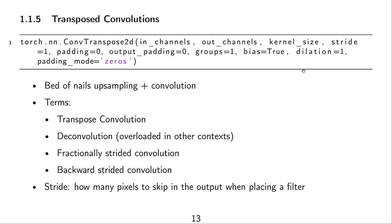Transpose convolutions are a very popular way of upsampling. And they are very similar to bed-of-nails upsampling plus performing a convolution. So, this is the PyTorch command, ConvTranspose2D. And you can see that a lot of these parameters are similar to what you know from a regular convolutional layer. You have a kernel size, a stride, a padding, you have the groups, you have dilation. There are other terms that are used for this, such as transpose convolution, that's maybe the main name. Deconvolution, maybe that's not a nice name, as it has other meanings already in signal processing. Fractionally strided convolution or backward strided convolution. So, the stride tells us how many pixels to skip in the output when placing a filter.